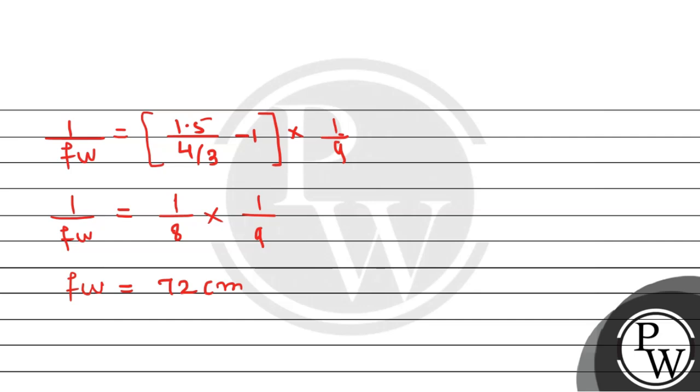But basically, the difference or change in focal length will be equal to f_w minus f_a. So this equals 72 minus 18, which equals 54 cm.